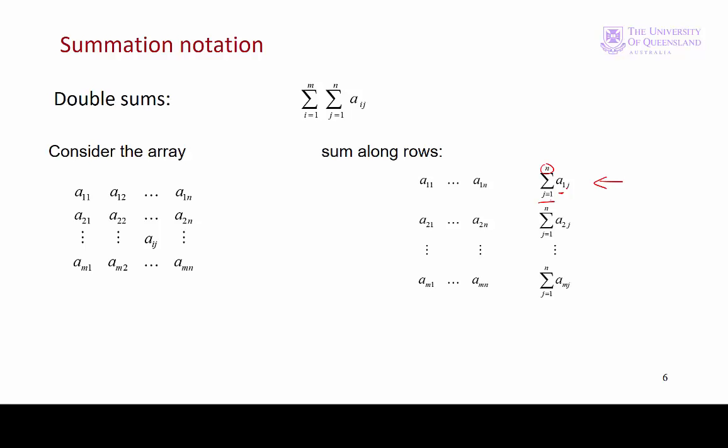Similarly for row 2, we'll have a2, so it's row 2, summing from j equals 1 to n, and so on down the m rows. Thinking about it that way, we'll have our m row totals.